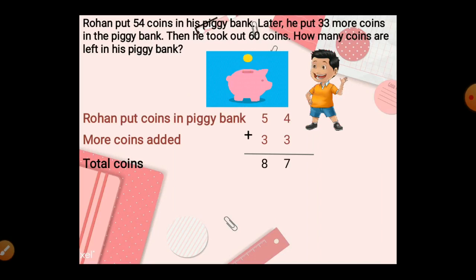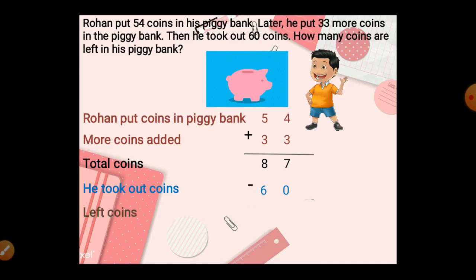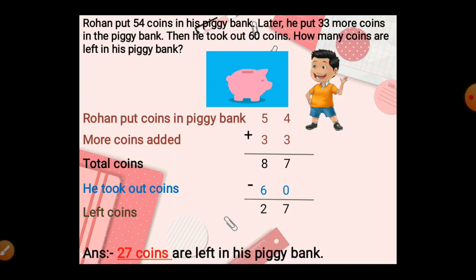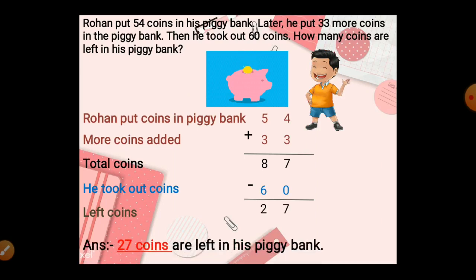Now he took out 60 coins, so subtract 60 from 87. 7 minus 0 is 7, 8 minus 6 is 2. Our answer is 27 coins are left in his piggy bank.